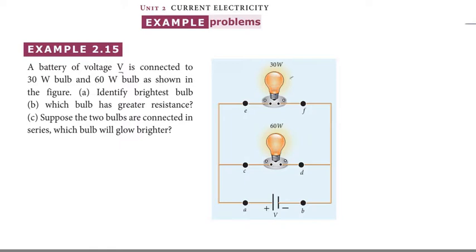The battery connects the 30 watt bulb and 60 watt bulb. First, identify the brightest bulb. Second question, which bulb has greater resistance? Third question, suppose the two bulbs are connected in series, which will grow brighter?